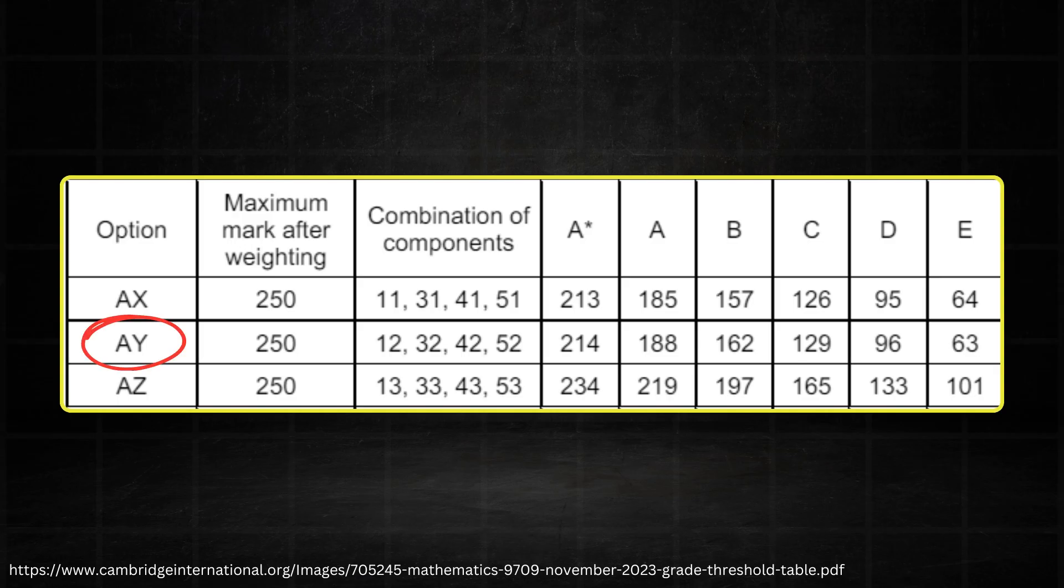Bob took the AY option, which has paper 12, paper 32, paper 42, and paper 52. So if we look at the thresholds for that option, we can tell that Bob's syllabus total would lie between 162 and 188. So this means Bob's symbol is a B.